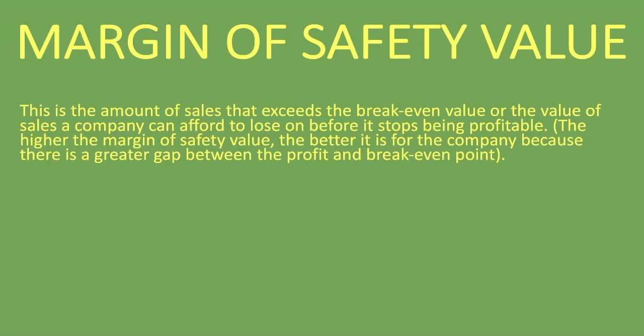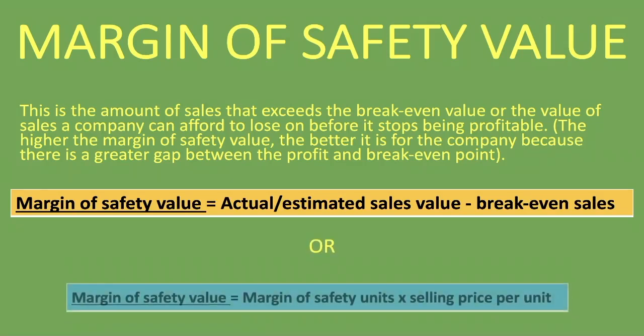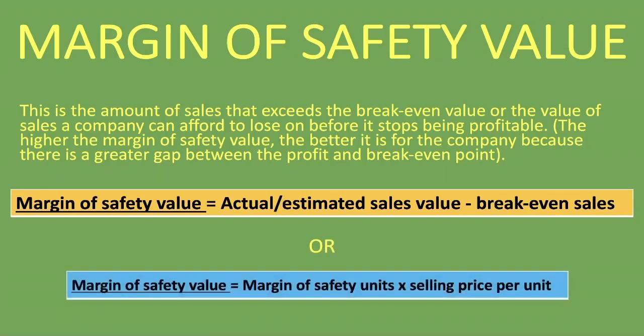So what is the formula for calculating the margin of safety value? It's the actual or estimated sales value minus break-even sales, and that gives you your margin of safety value — it's the difference between the actual or estimated sales value and the break-even sales. Another way you can do this is by taking the margin of safety units and multiplying it by the selling price per unit.